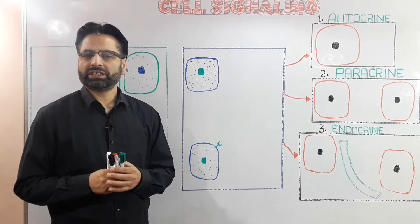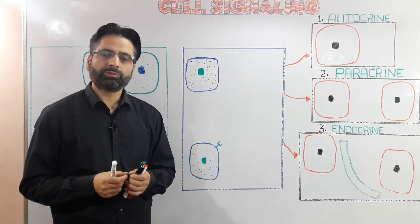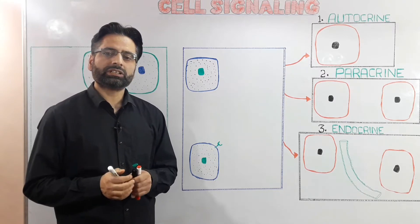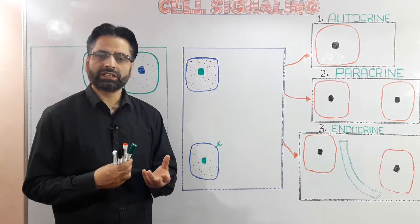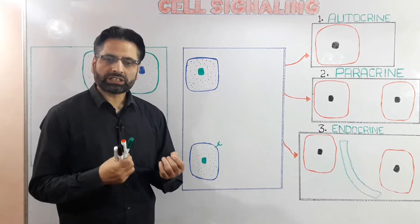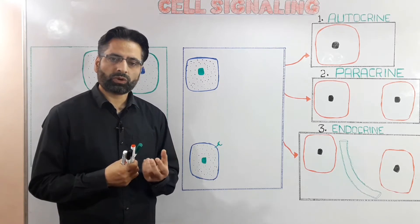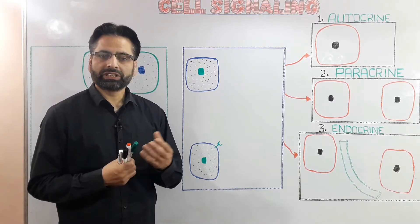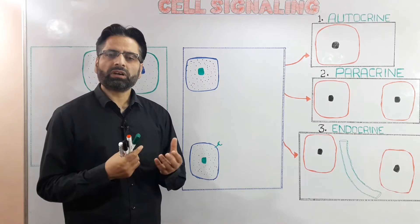Cell signaling at the most basic level is a kind of molecular dialogue between the cells. In this molecular dialogue, each cell receives signals from its neighboring cells within the body of a multicellular organism, and in return this cell is capable of sending its own molecular signals to the other cells. It also responds to these signals by changing its structure or functional activities. This whole process of communication between cells within the multicellular organism is called cell signaling.